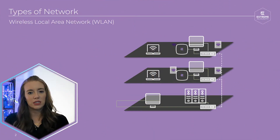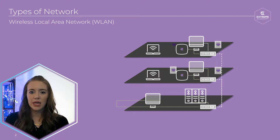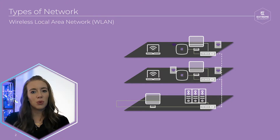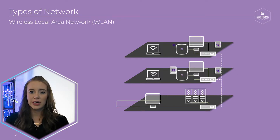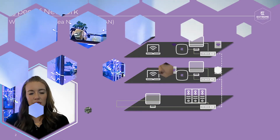Now let's think about our wirelessly connected devices. In our house, we have a few laptops, a printer, a few smartphones and tablets. These are all part of our WLAN, or a wireless local area network. Because these devices are using wireless communication to create a local area network, they make up my WLAN. In summary, a wireless LAN is a LAN that doesn't require cables to access the internet. Makes sense, right?